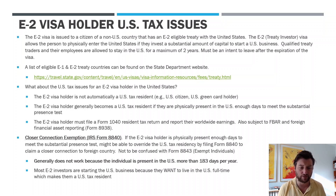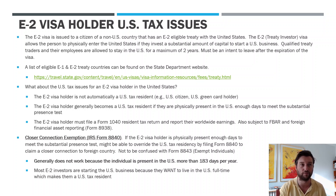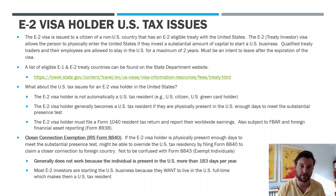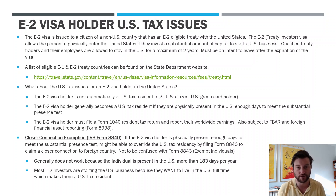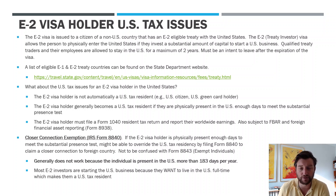E-2 visa holders generally become U.S. tax residents because their intent is to move to the United States, open a business, and run the business from the U.S. — they're not just hoping to be temporarily in the United States for a few days a month. Once you step over that substantial presence test line, you are a U.S. tax resident, so you're filing Form 1040, which is the U.S. individual income tax return. In contrast, the 1040NR is filed for individuals that are non-residents who don't meet the substantial presence test but have U.S. source income. E-2 visa holders are certainly going to become U.S. tax residents if they're in the United States enough days during the year, which generally they are.